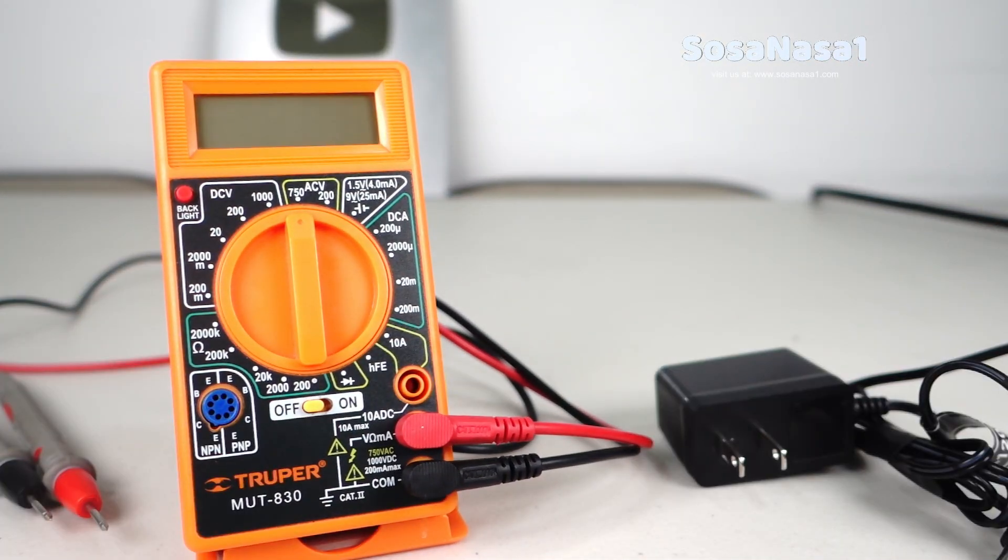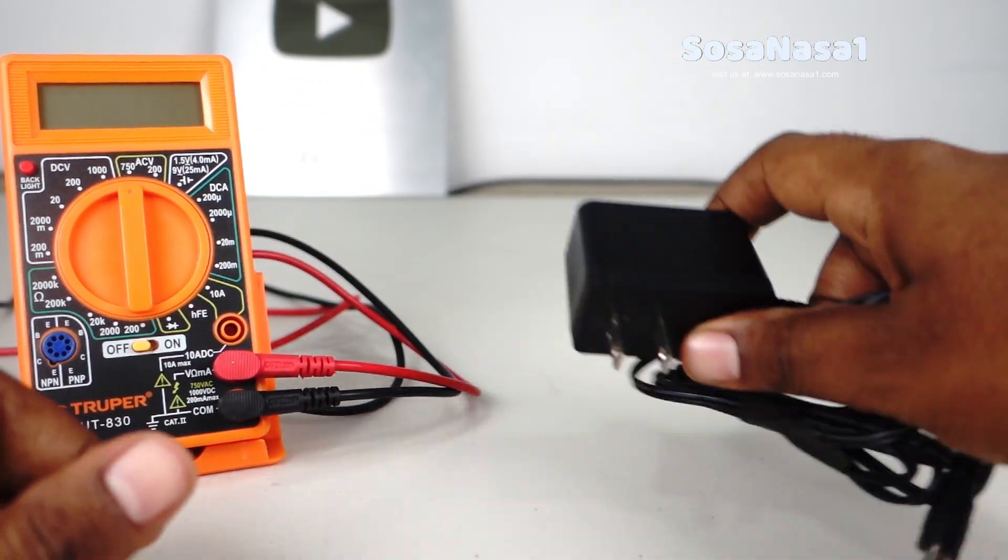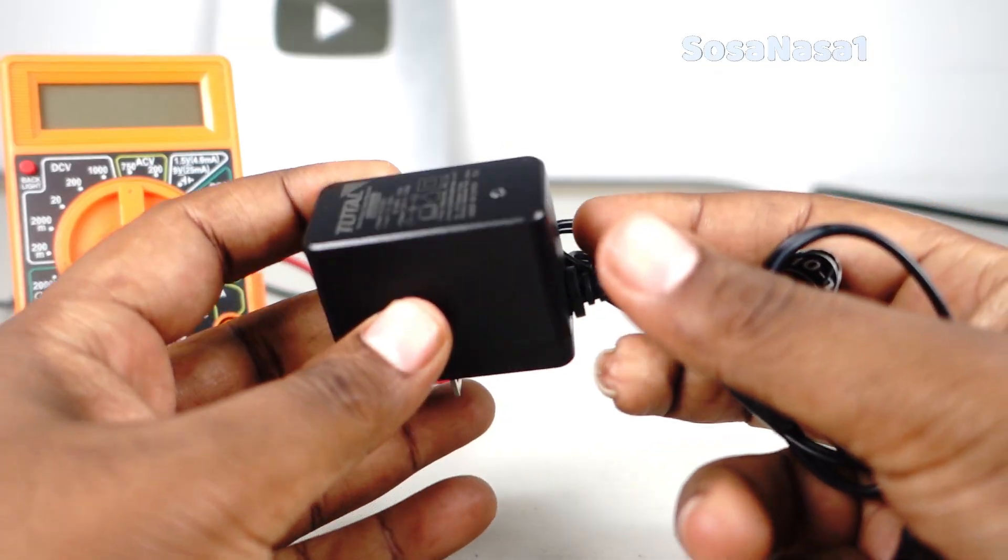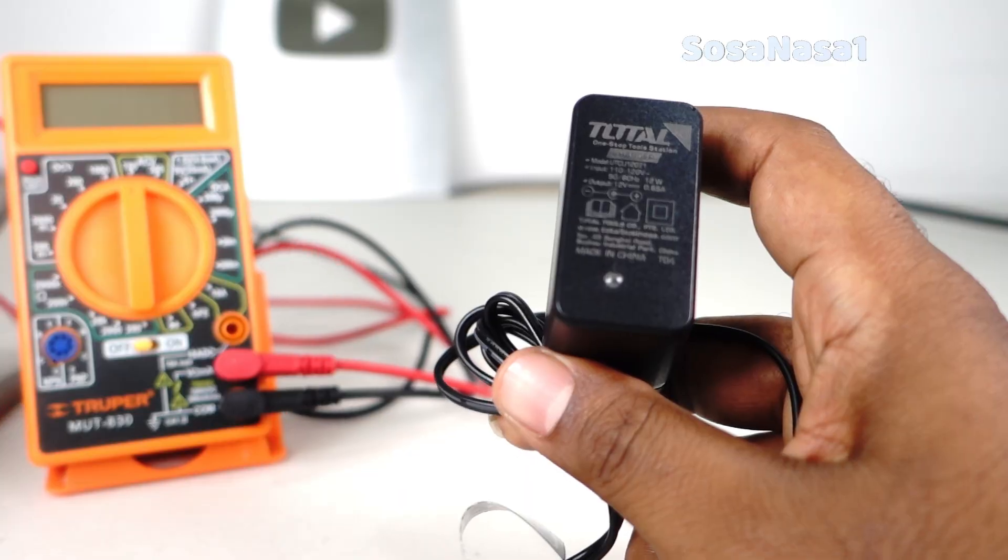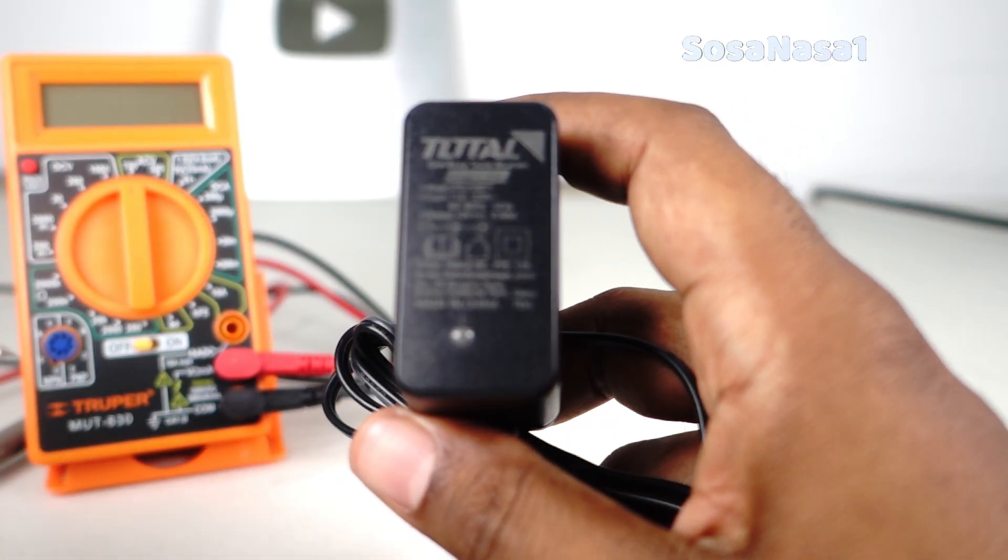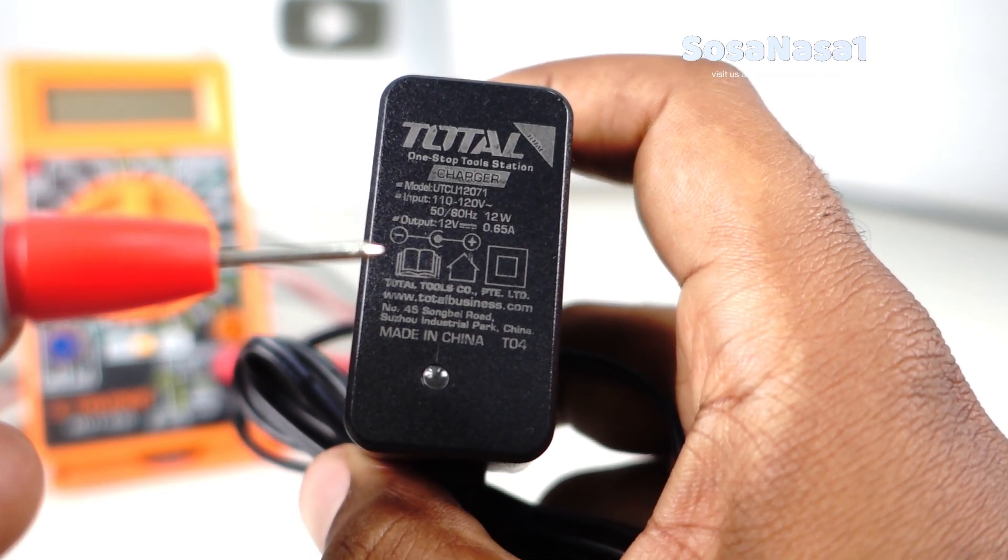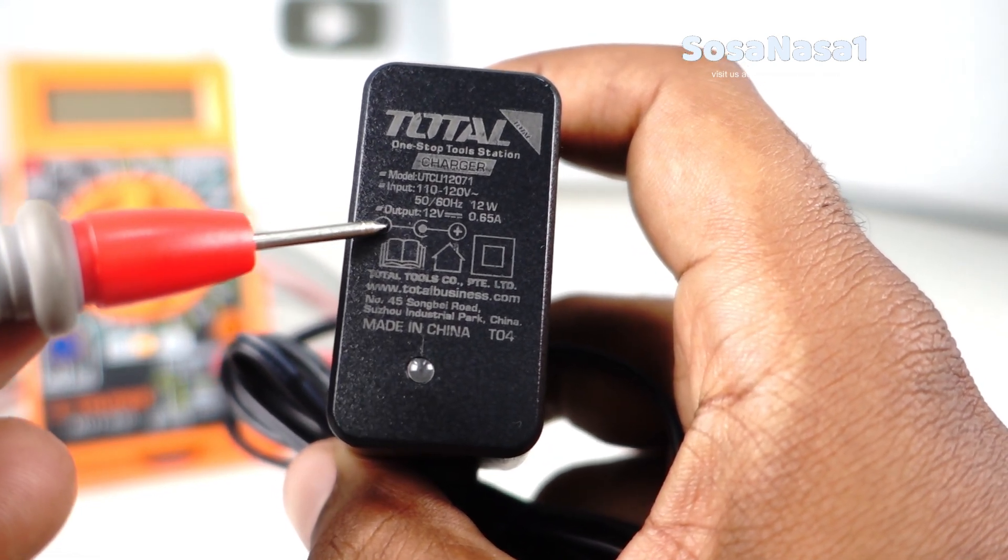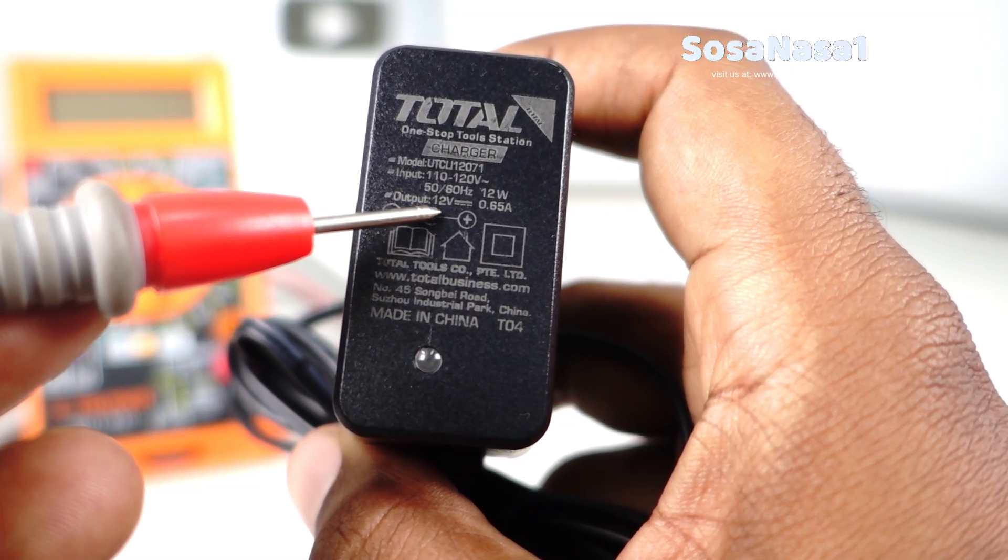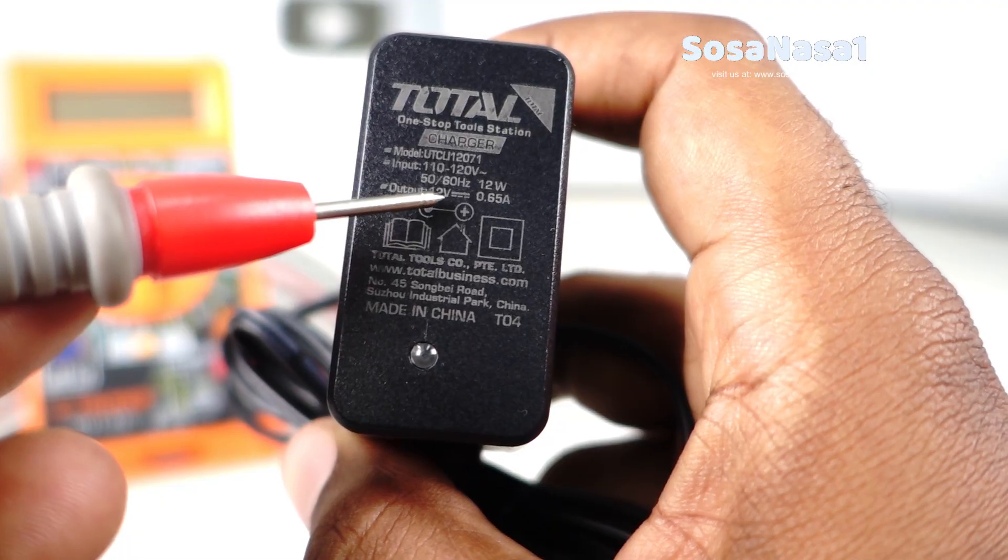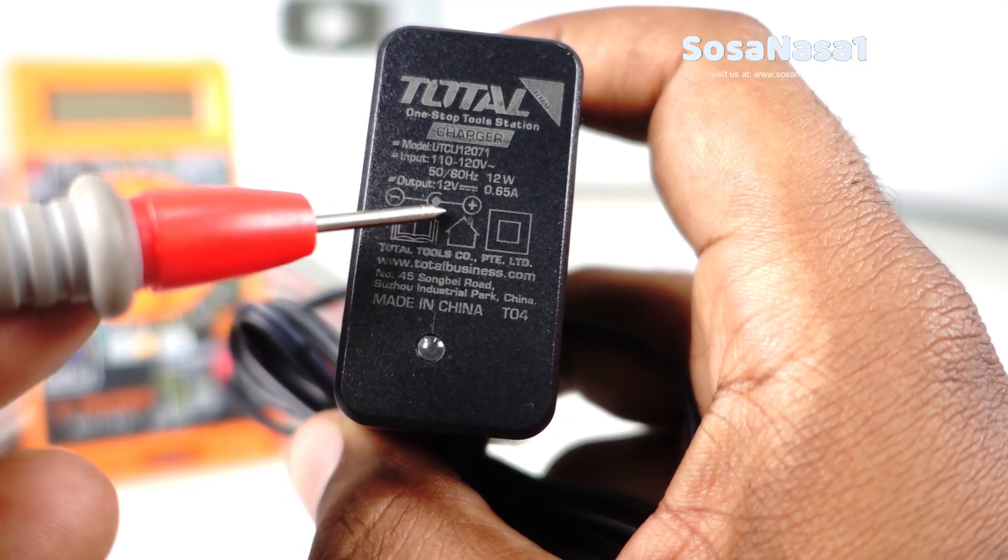The first step is to read the information on the charger. This is very easy, you only need to read the information here. Let's watch here in this part: output 12 volts, and this symbol means direct current voltage. This is the important information to measure this charger using the digital multimeter.